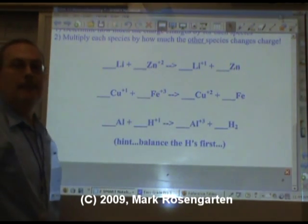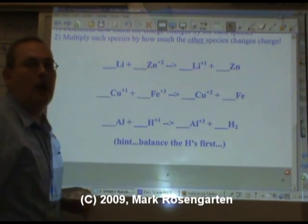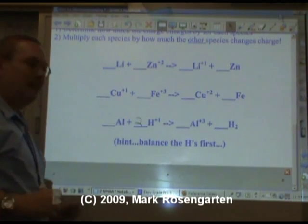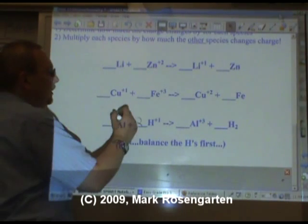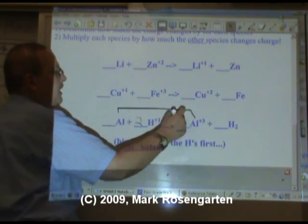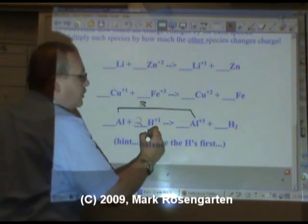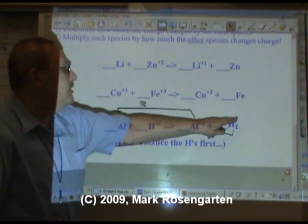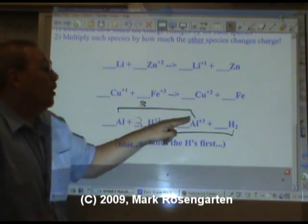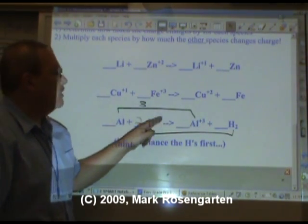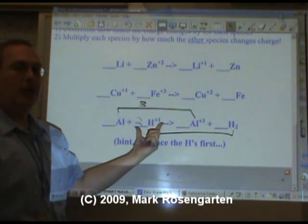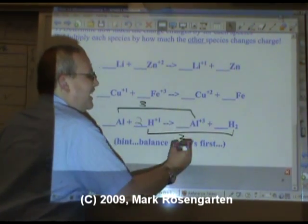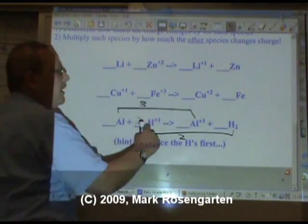What if you've got a Brønsted-Lowry in it? Your first job is going to be to balance the Brønsted-Lowry first by putting a two in front of the H⁺¹. And then you can proceed from there. The aluminum changes its charge from zero to three. So it changes by three. How much does the hydrogen change by? Well you might be tempted to say it changes by one because it goes from plus one to zero. But two of them are doing that. Two H⁺¹ are becoming zero. What's two times plus one? Plus two. It's going from plus two to zero. So it changes by two. That's why you balance the Brønsted-Lowry first.